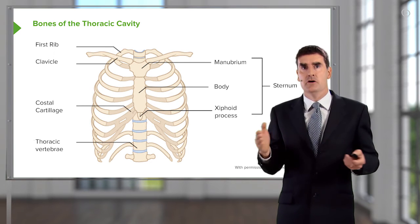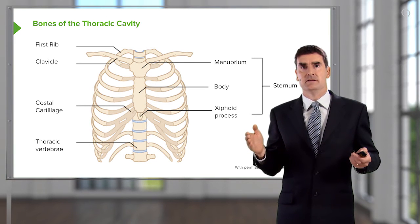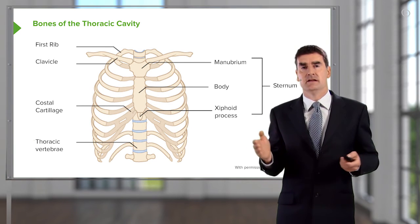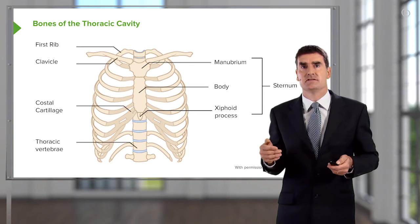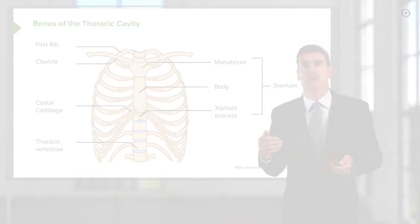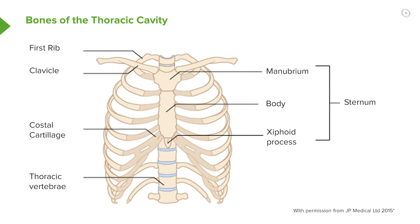This is an overview of the skeletal structure of the thoracic cavity. You can see the sternum at the front with its body in the middle, the manubrium at the top, and the xiphoid process at the bottom. The vertebrae run behind and the ribs run between the two.